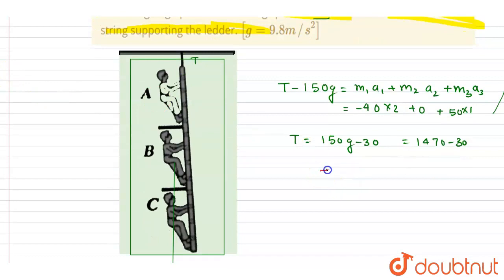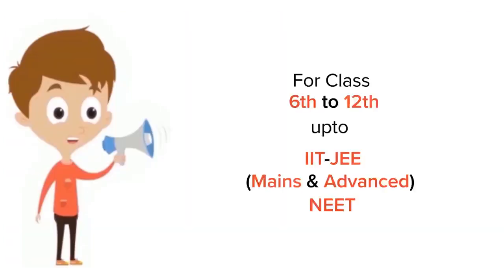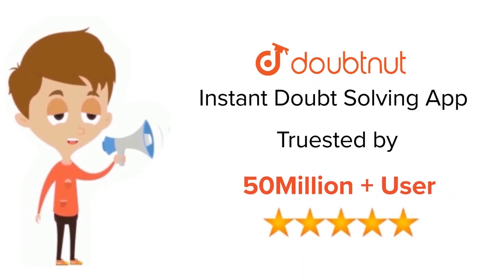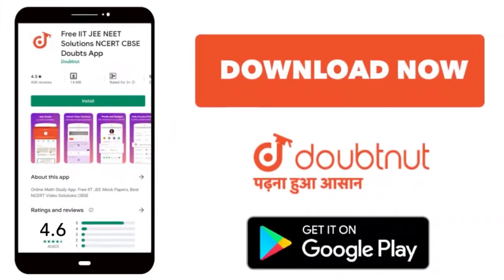down the tension is equal to 1440 newton, and this is the answer of this question. Thank you. For class 6th to 12th, IIT-JEE and NEET level, trusted by more than 5 crore students, download Doubtnet app today.